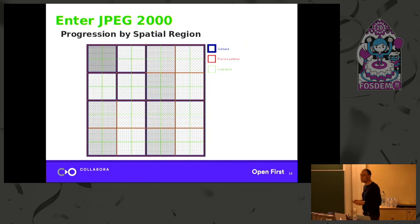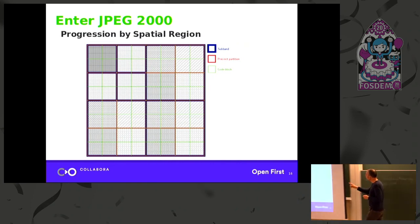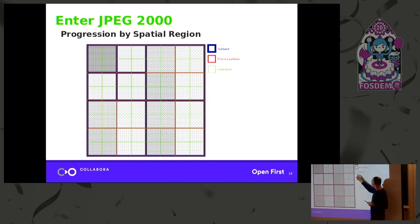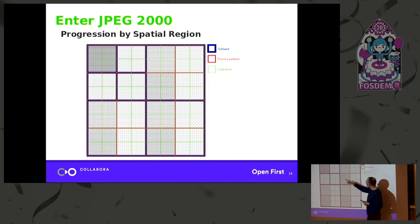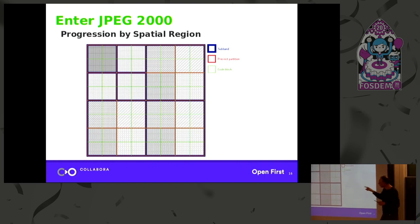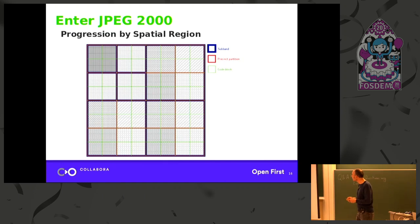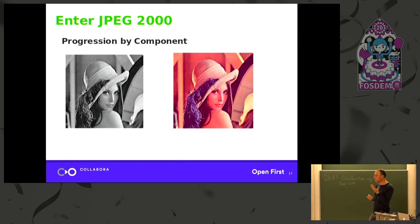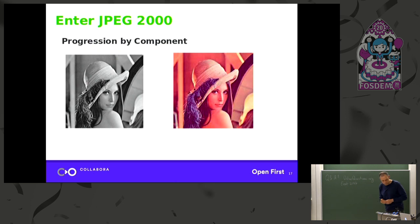There's also progression by spatial region. You can see the original subbands from the wavelet, and inside those we have precincts, and inside the precincts we have code blocks. You can encode by precinct — useful for a scanner limited by memory, encoding one precinct at a time. It's also useful for random access into the image. The final progression is by component — for an RGB image you can break it into luminance and chroma channels, and a grayscale printer could just throw away the chroma and keep the luminance.